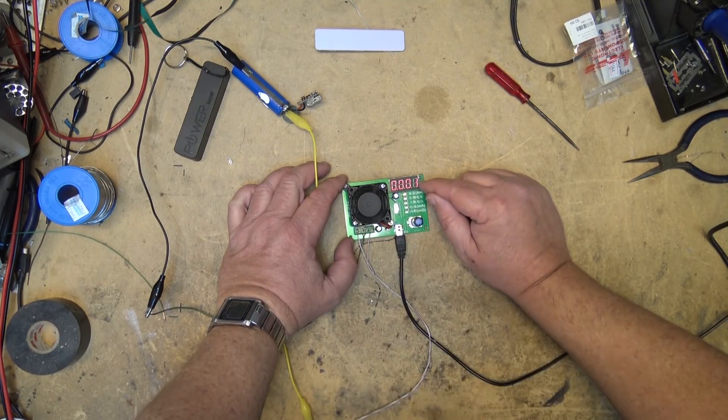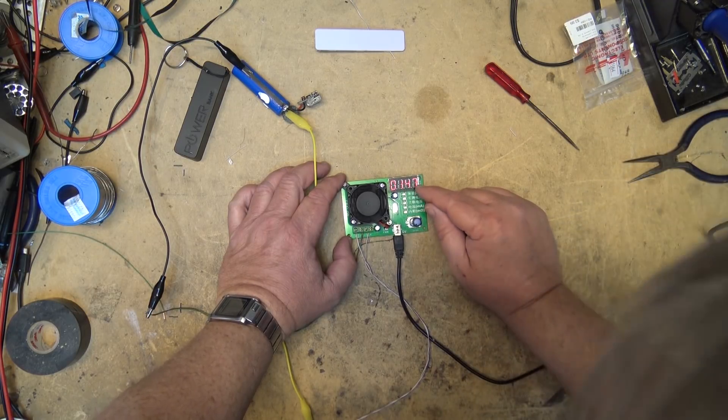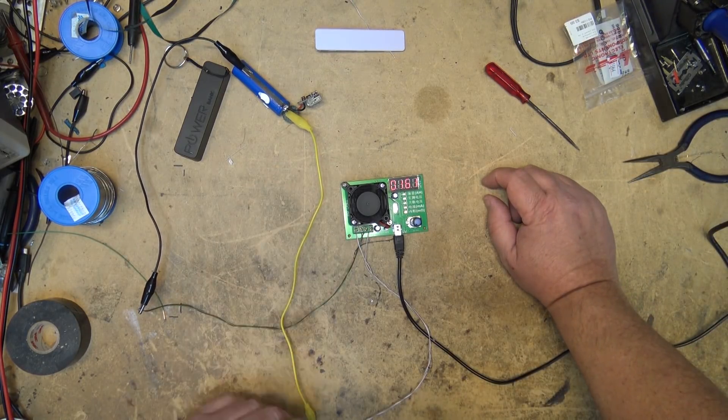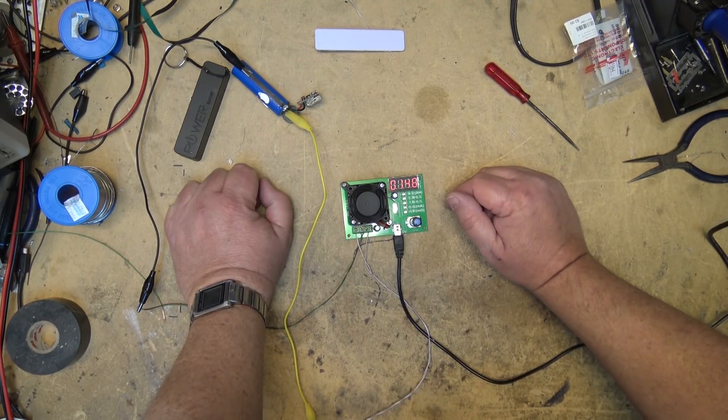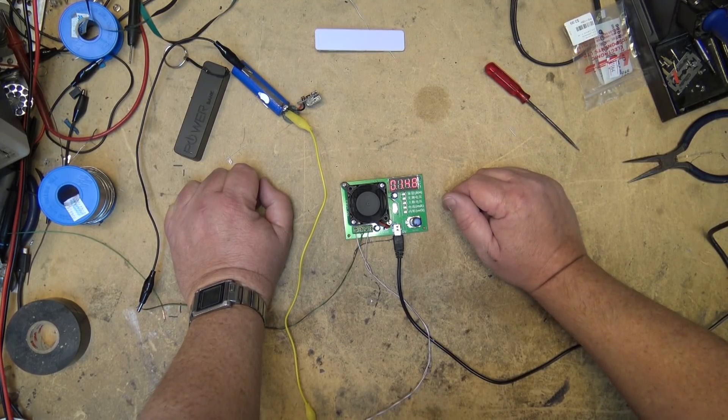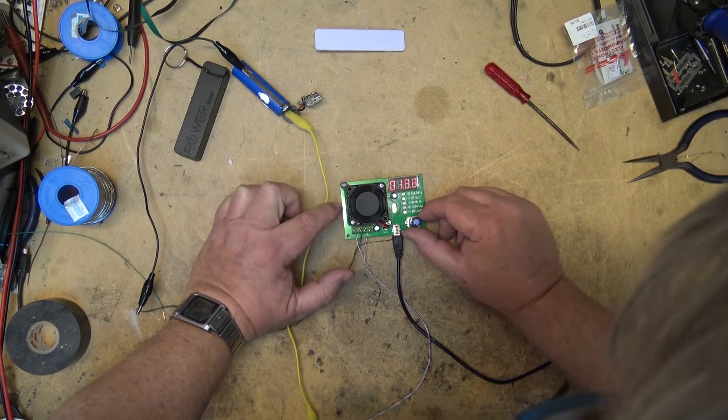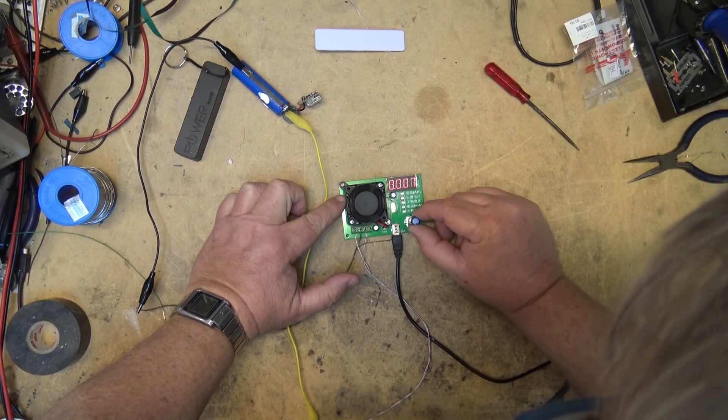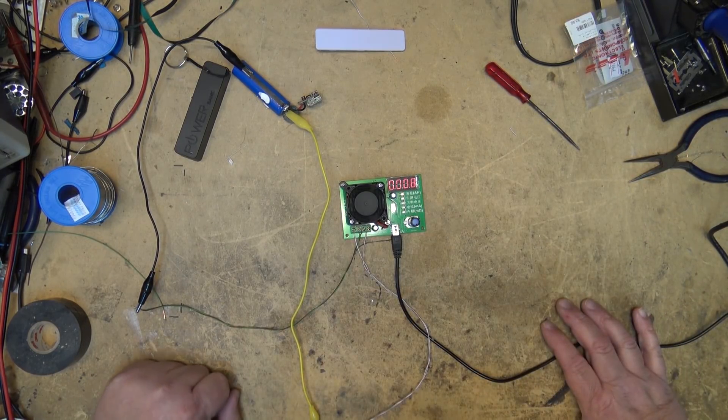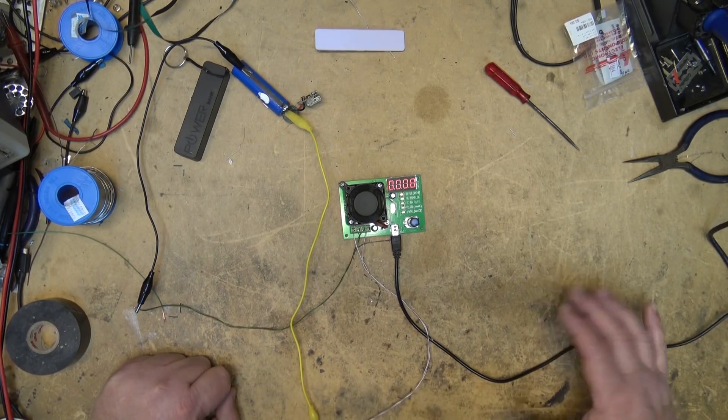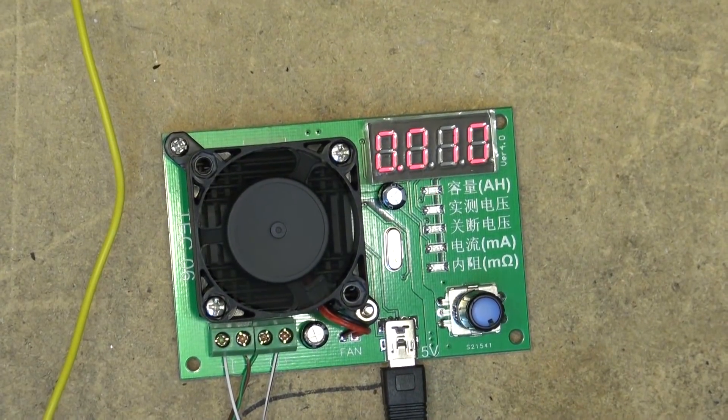This is going to count our amp hours, and here is our internal resistance of the battery. This thing is now going to discharge the battery and as the battery discharges at a one amp discharge rate it will calculate our capacity in amp hours. So if we switch it up to amp hours here, this will count our amp hours for the battery until the battery goes dead. Now we'll just let this thing discharge and we can time how long it takes to discharge the battery.